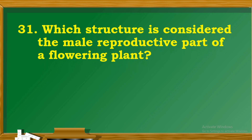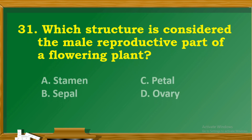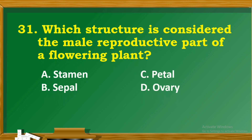Question 31: Which structure is considered the male reproductive part of a flowering plant? A. Stamen. B. Sepal. C. Petal. D. Ovary.